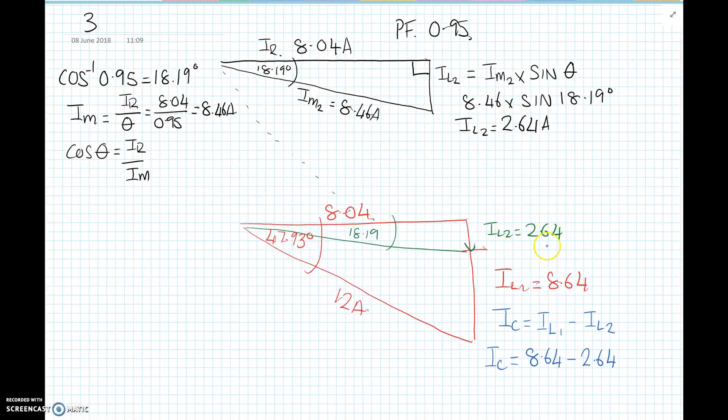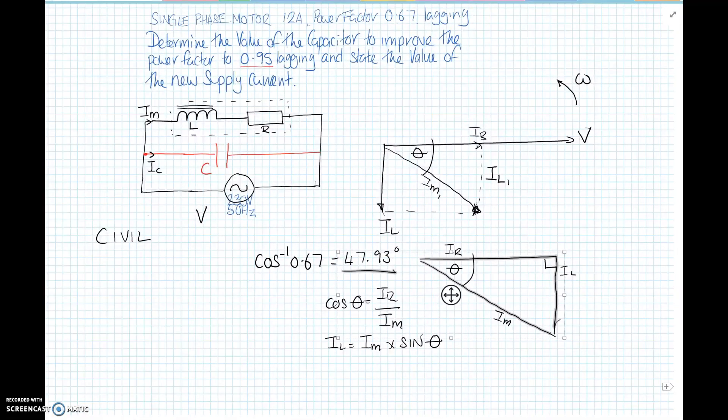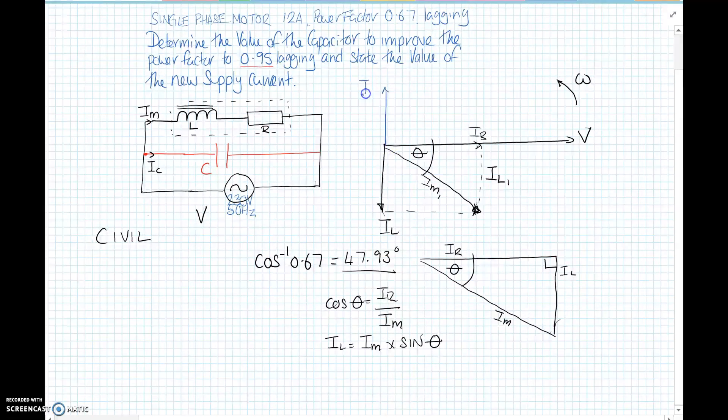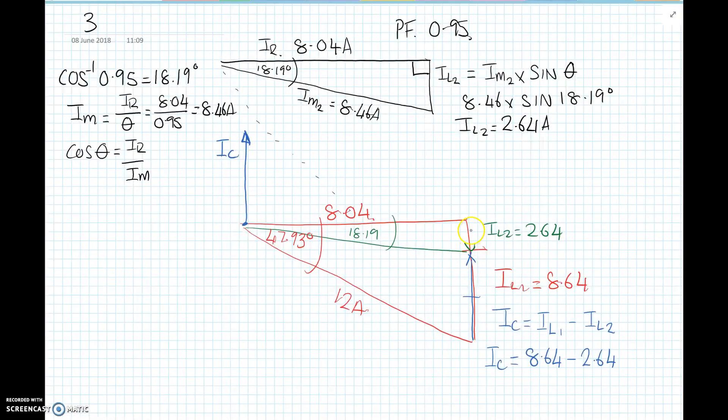So as a comparison then, before the correction the reactive current was 8.91. With the power factor correction improved to 0.95, the new reactive current is 2.64. So we need to take this away. Because it's a phasor, if we add that on here, that is going to take that on the leading edge off the lagging edge. So this is actually the current flowing through the capacitor, IC. And IC, remember in a capacitive circuit I leads V. So now the current through our capacitor is leading, whereas the current through our inductor is lagging. To find the difference, we take the two away, and that gives us 6 amps.